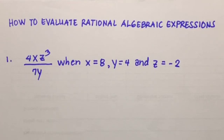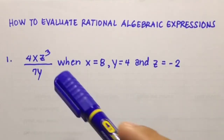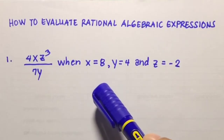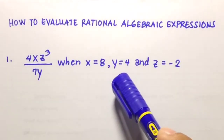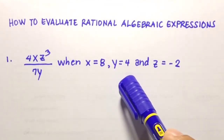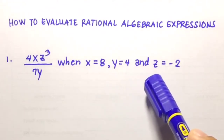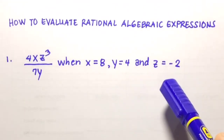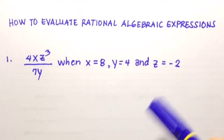For example, here in number 1: 4xz cubed over 7y. We need to find its value when x is equal to 8, y is equal to 4, and z is equal to negative 2.